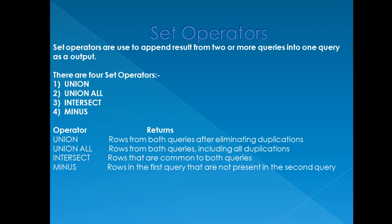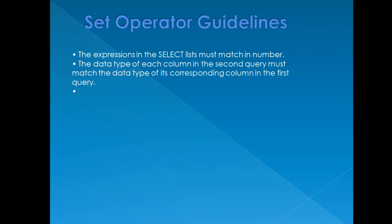Now let's discuss some rules of set operators. In set operators, the expressions in the SELECT list must match in number — when you are writing two SELECT statements, the number of columns in both statements should match. If in the first statement you have mentioned two columns, in the second statement there should also be two columns. The second rule is that the data type of each column in the second query must match the data type of its corresponding column in the first query.